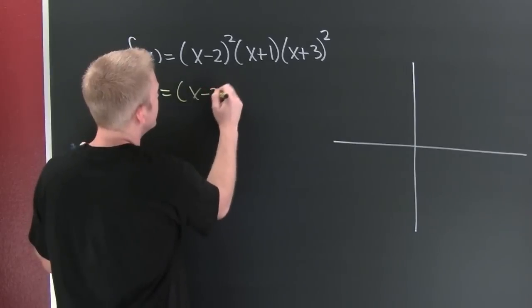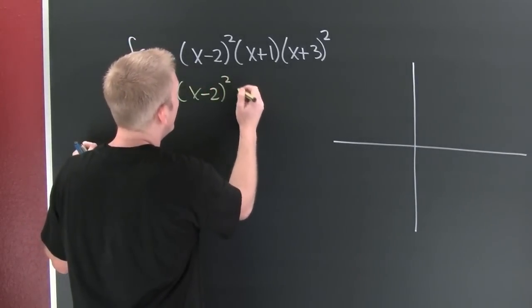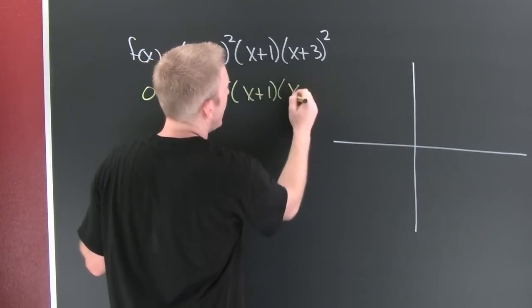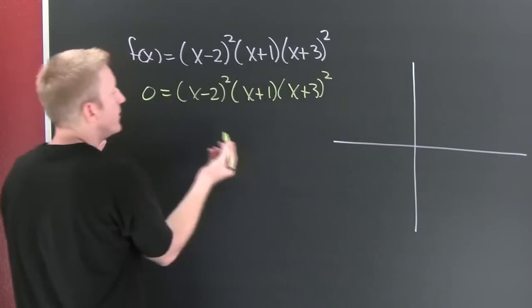You set it equal to zero: (x-2)² times (x+1) times (x+3)². What are my zeros?